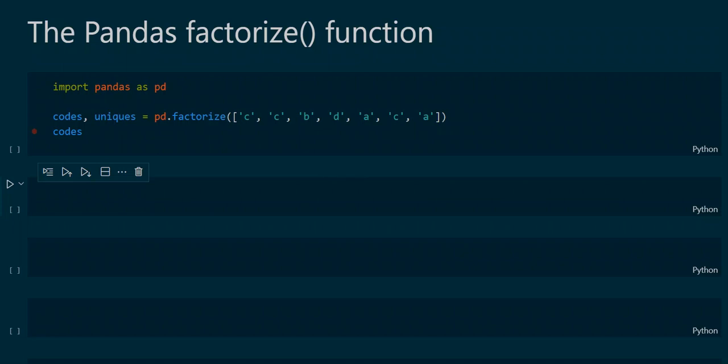To get started we will first see how the function factorize works at a base level. We first import the pandas library and then apply the factorize function, assigning it a list of characters. We set this function equal to two variables, codes and uniques, because we get two return values.